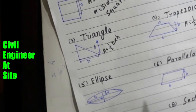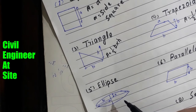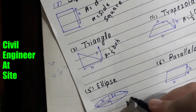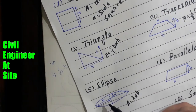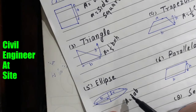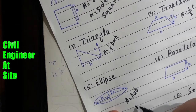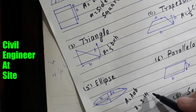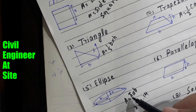The fifth shape is the ellipse. The area formula for the ellipse is A = π × a × b, where a is the half minor axis and b is the half major axis. When we multiply the half minor axis and half major axis with pi — pi is the constant equal to 3.14 — this gives the area of the ellipse.